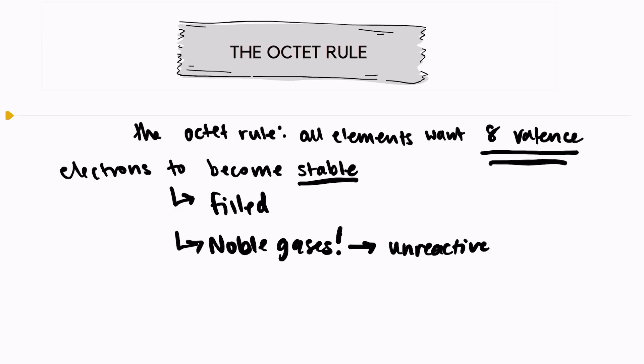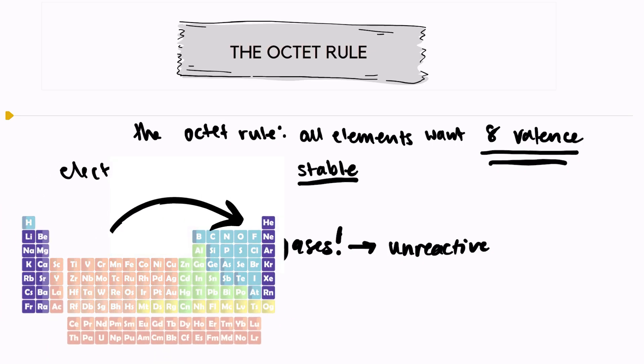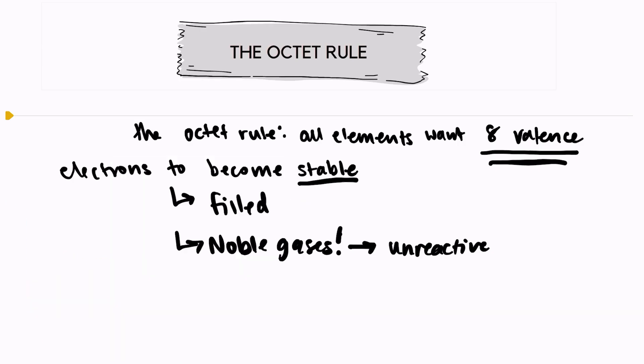There's other elements on the periodic table like the metals in groups one and two, the non-metals in groups 16 and 17 that are extremely reactive. That's because they're super close to following this rule of having eight valence electrons. So they bond in such a way to achieve this goal and become stable.